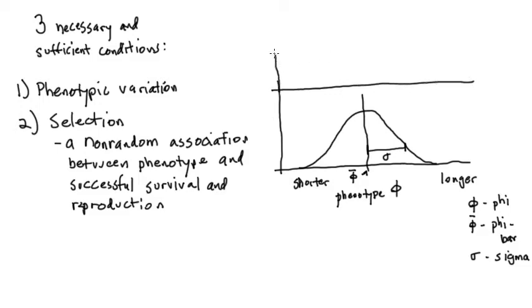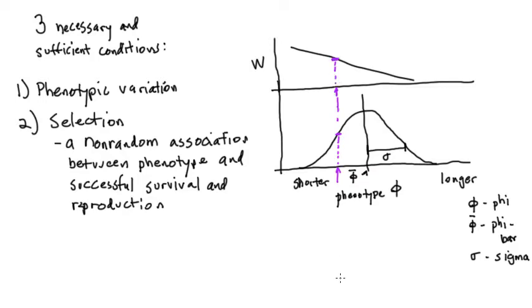Directly above the phenotypic distribution and using the same horizontal axis, we'll draw a second graph for fitness — the likelihood of survival and reproduction, represented by a capital W. The lower graph gives the phenotypic distribution for the entire population at generation T before selection has had a chance to act. The upper graph gives fitness — the expected chance of survival and reproduction as a function of phenotype. If I draw the fitness relationship with a line going downward, that means lower phenotypic values have higher expected survival and reproduction, with longer arms associated with lower fitness.